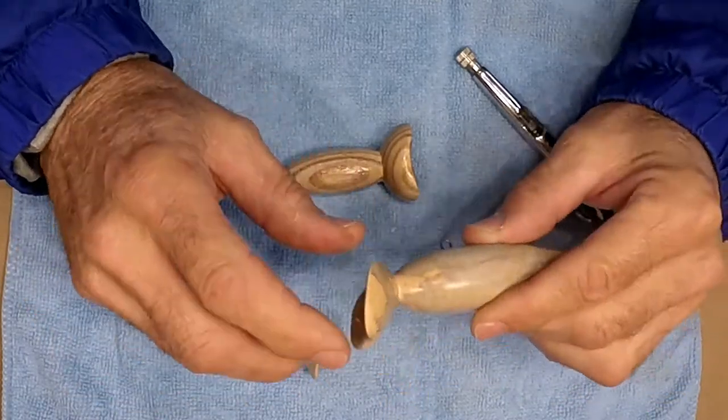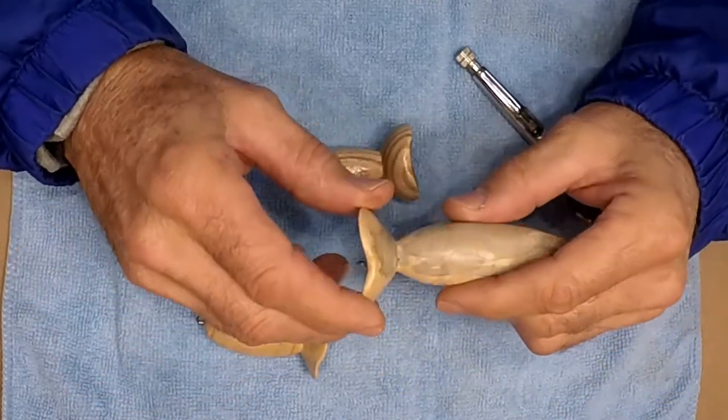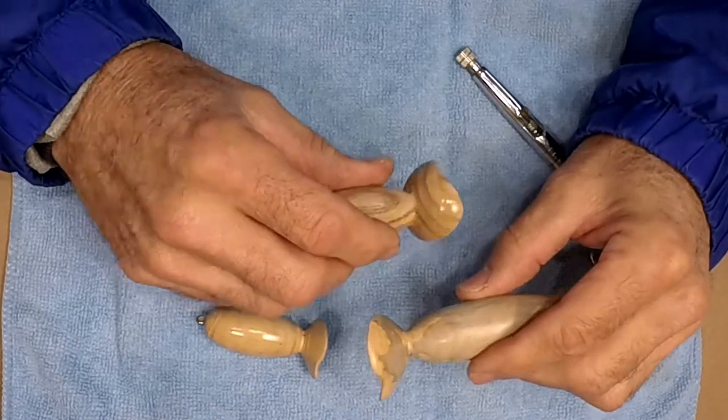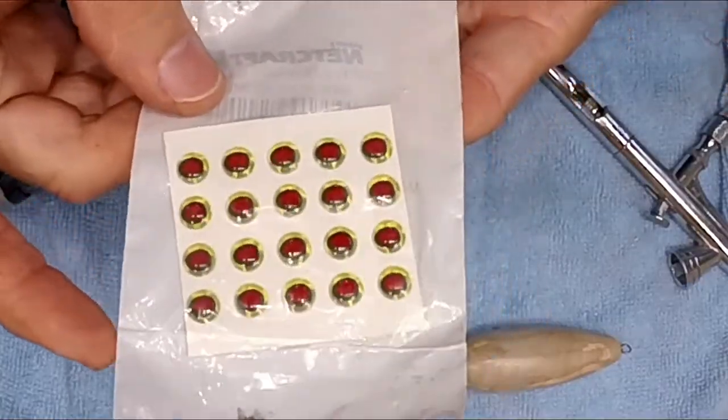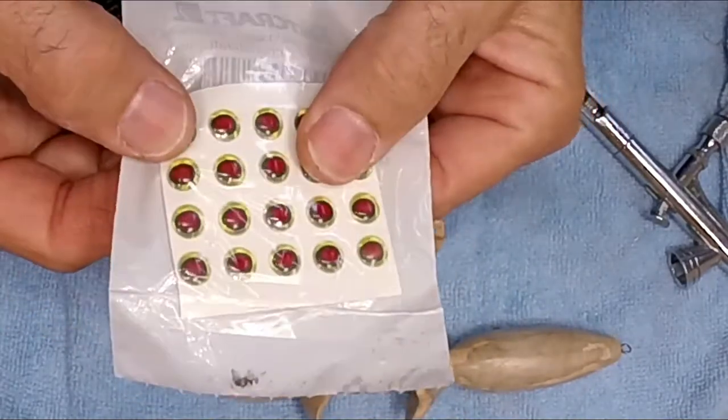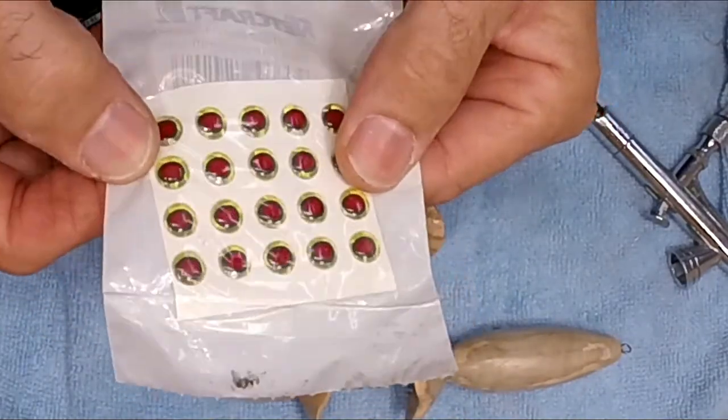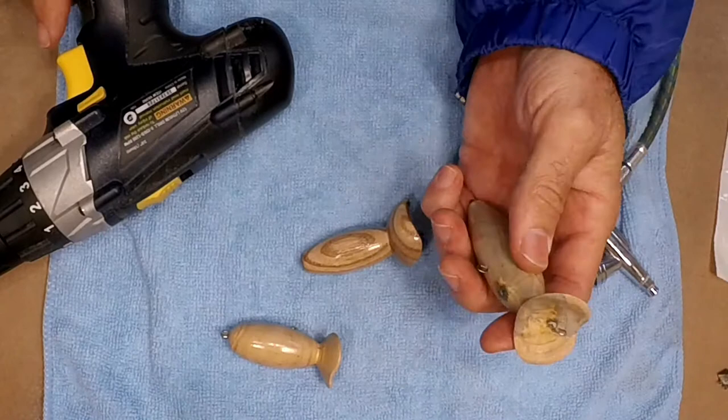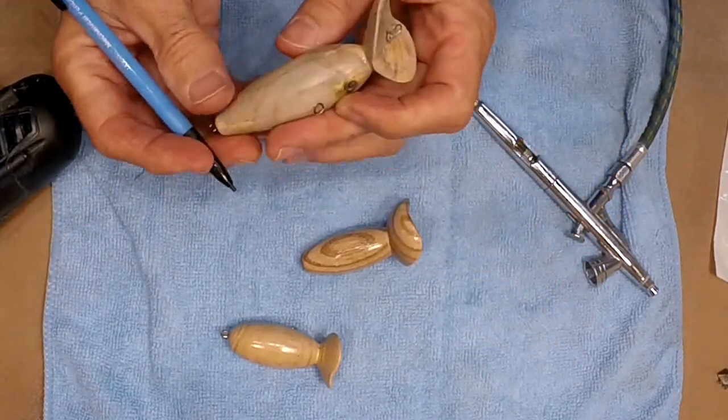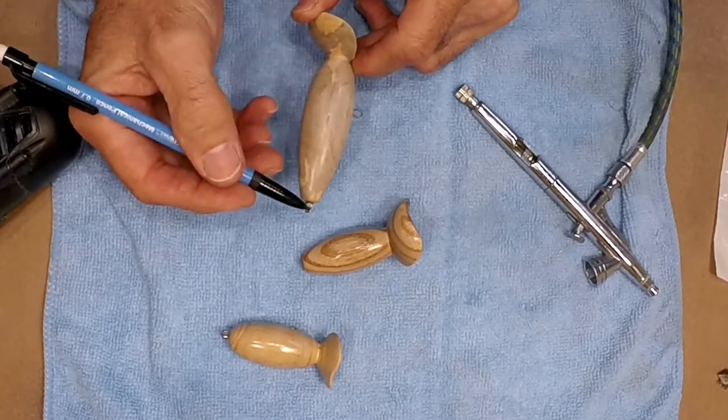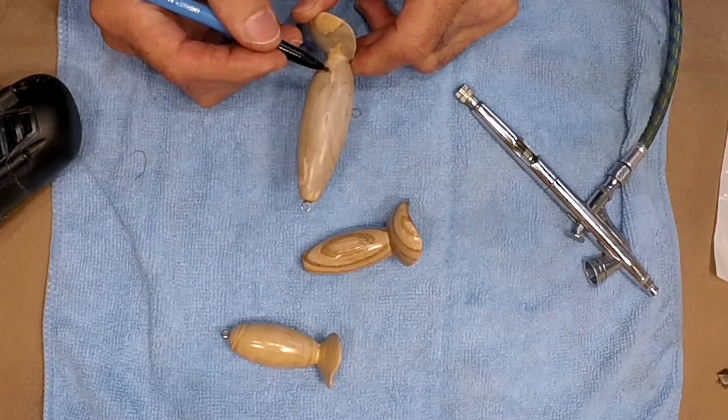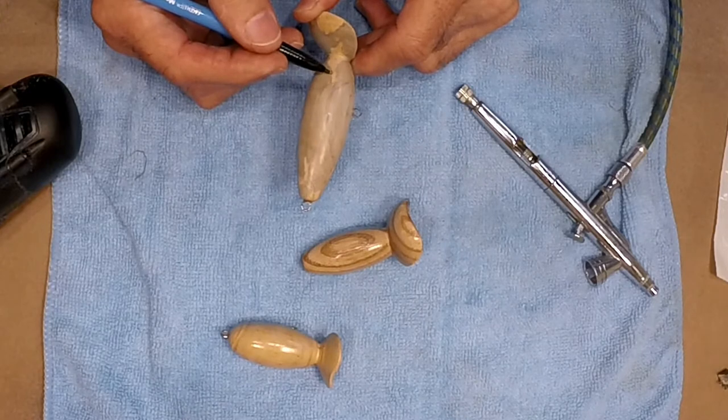I haven't set where the eyes are going to go yet, but I think I'm going to do that before I paint. These are the eyes I'm going to use. They're frog eyes. You can see they've got that weird shaped center. I'm going to eyeball where the eyeball is going to be, somewhere along the center line, probably closer to the fat point.